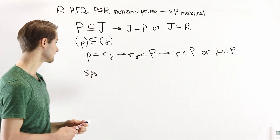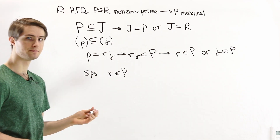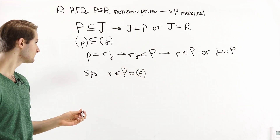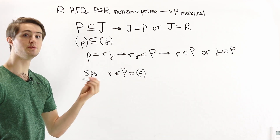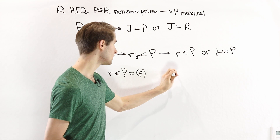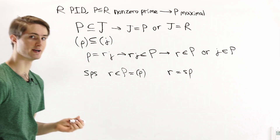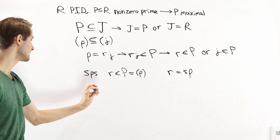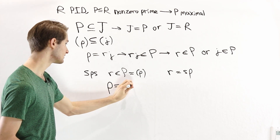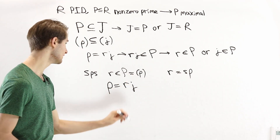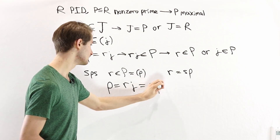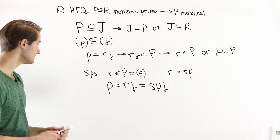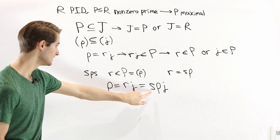Now let's look at the other case: suppose that r is in P. In that case, the ideal P is generated by the element p, and if r is in this ideal, r must be a multiple of p. So r is equal to some element s times p. Bringing this back to our equation p equals r times j, we substitute to get p equals s·p·j.